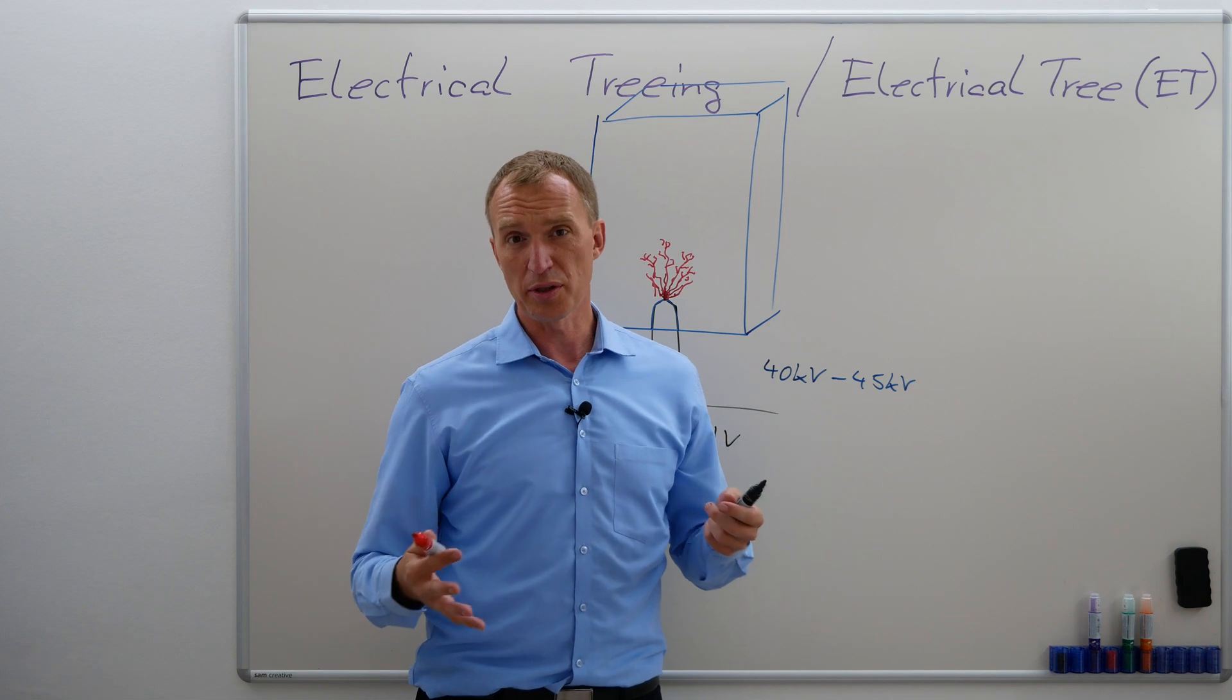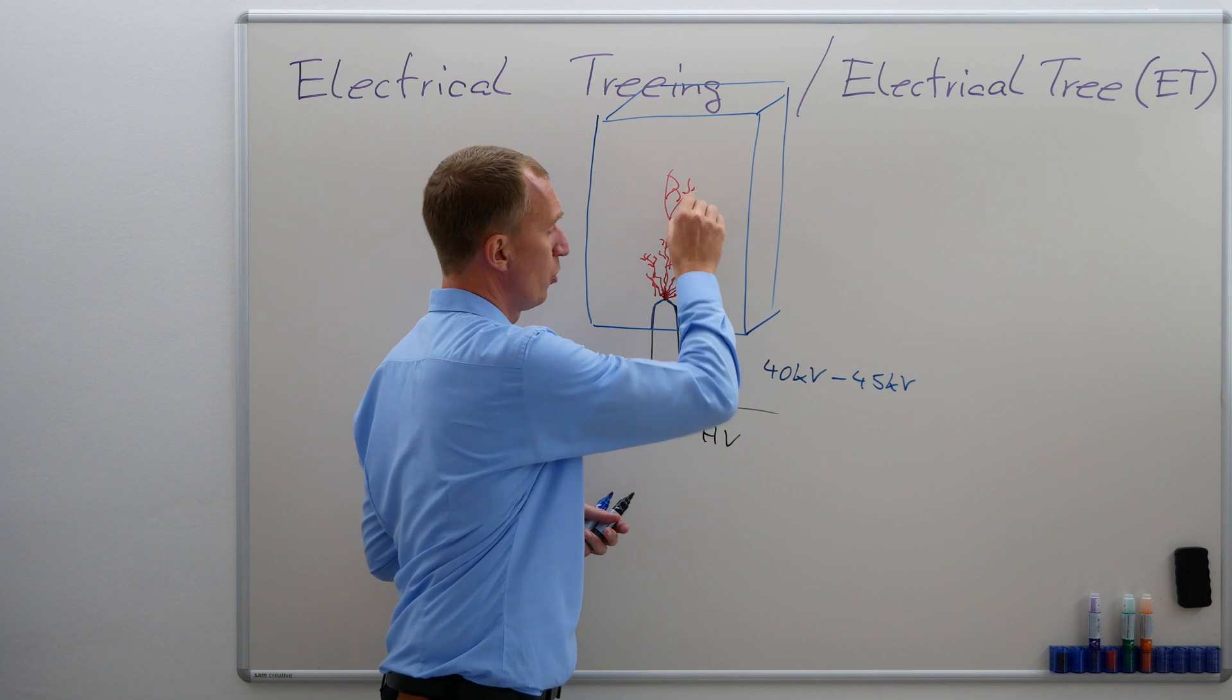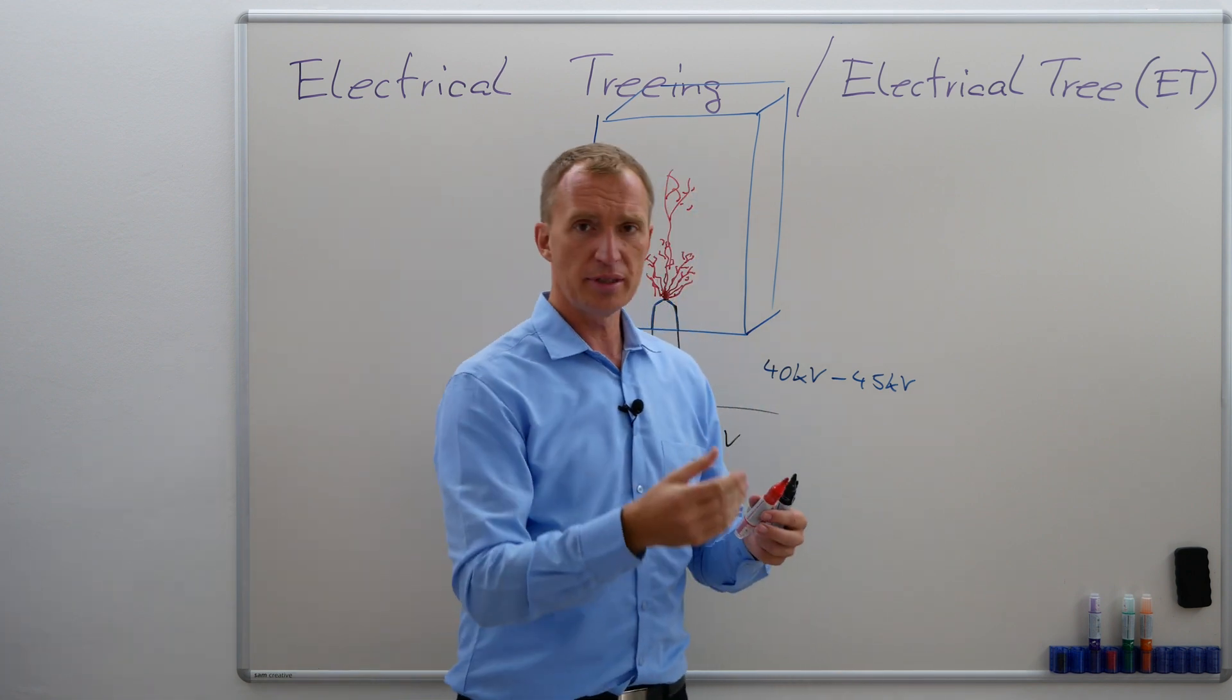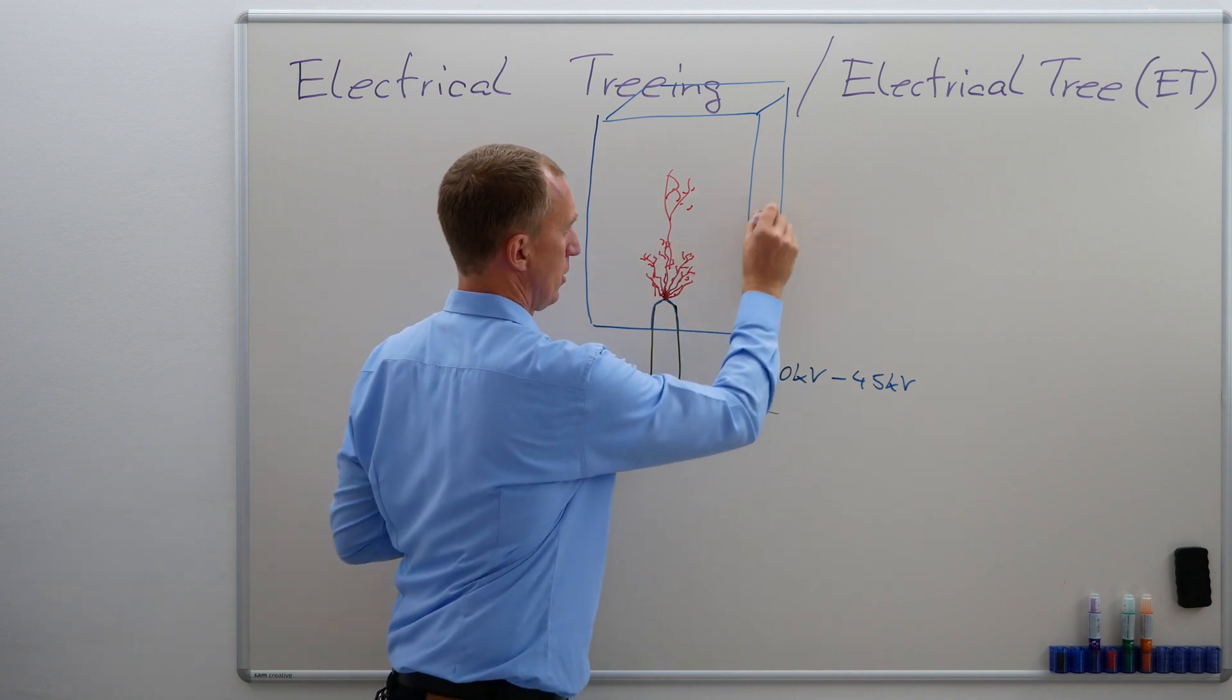So it kept growing. And if you would have stopped it, it probably would have gone bigger with more and more branches. In our case, what happened? It actually was able to hit the outer surface over here.